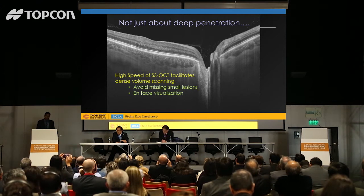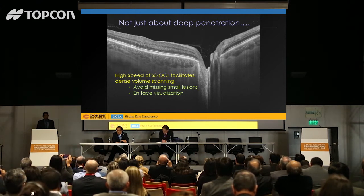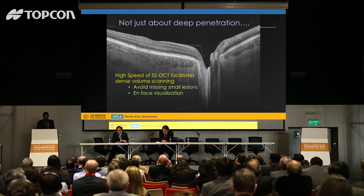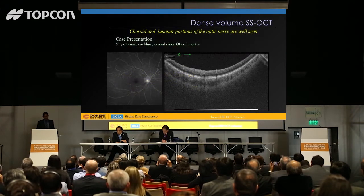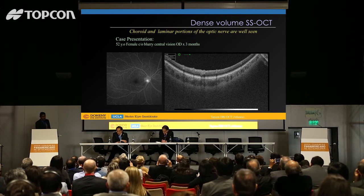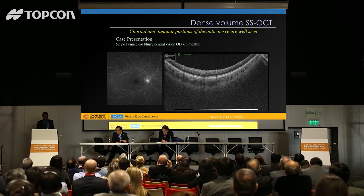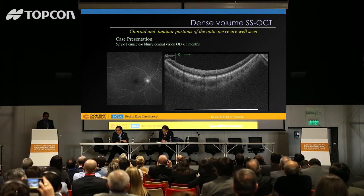The higher speed is of benefit for avoiding missing smaller lesions that might otherwise fall between scans, as well as for doing OCT angiography visualization. Here's an example of a patient — the diagnosis is pretty obvious. You can see the abnormality in the optic nerve and recognize the subretinal fluid. You can also visualize that there's an abnormality of the optic nerve contributing to this. In fact, this patient has an optic pit-related maculopathy. What's really impressive in this single swept source OCT scan is that you can even see the abnormal lamina deep within the optic pit.